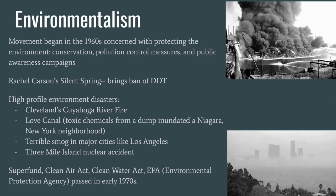A few more domestic items to wrap up. First, environmentalism — the movement began in the 1960s and was concerned with protecting the environment through conservation, pollution control, and public awareness. Rachel Carson's book Silent Spring brought to light problems with DDT, a chemical being sprayed to kill mosquitoes that was working its way up the food chain and killing birds; it was banned shortly after. Other high-profile environmental disasters included Cleveland's polluted Cuyahoga River catching fire, the Love Canal neighborhood in Niagara, New York found to be toxic from a nearby dump, visible smog from factories and automobiles in cities especially Los Angeles, and a nuclear accident at Three Mile Island that nearly made a chunk of Pennsylvania uninhabitable. Both Republicans and Democrats pushed for solutions, resulting in the Superfund, Clean Air Act, Clean Water Act, and the Environmental Protection Agency.